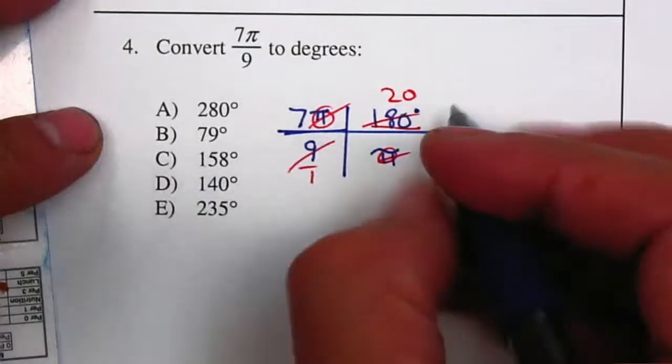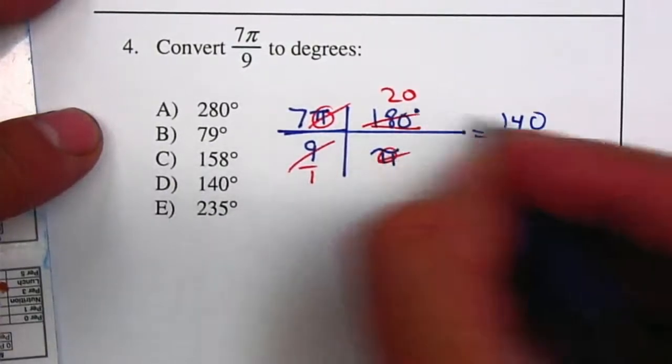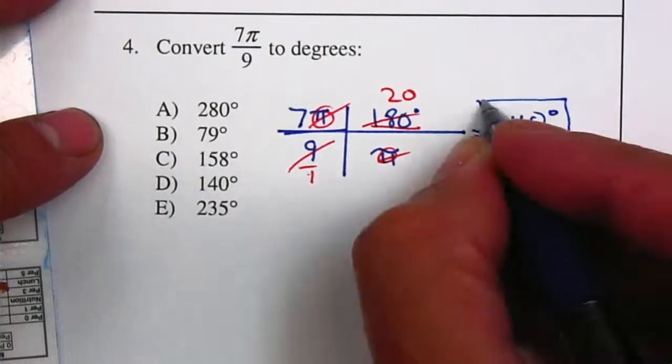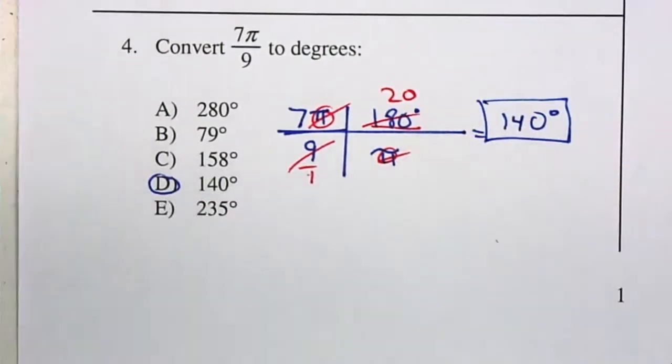So 7 times 20 will be 140. Don't forget your degree sign, and I don't need a 1 underneath, so it will be 140 degrees, which will be letter D.